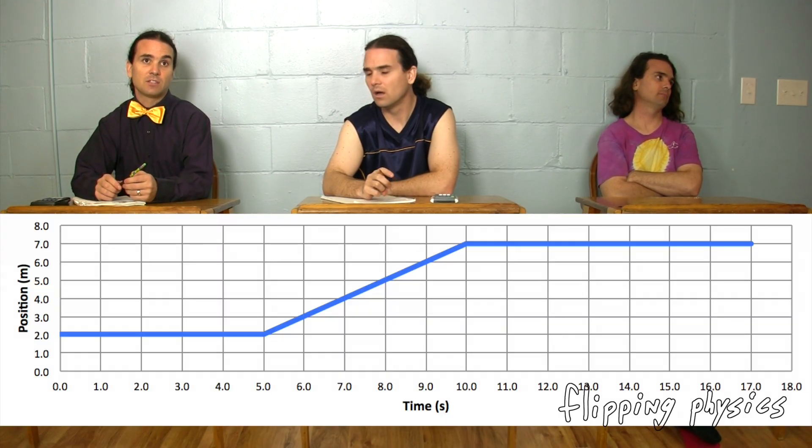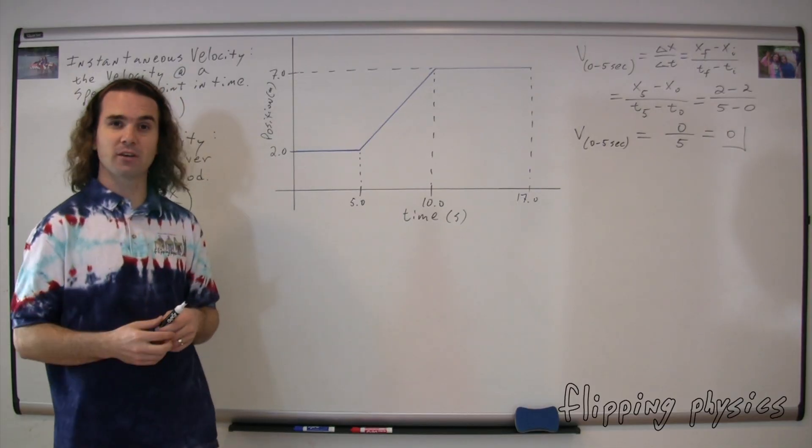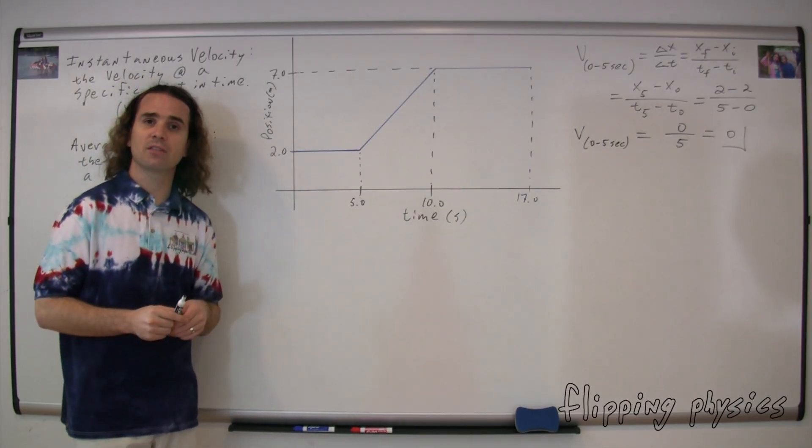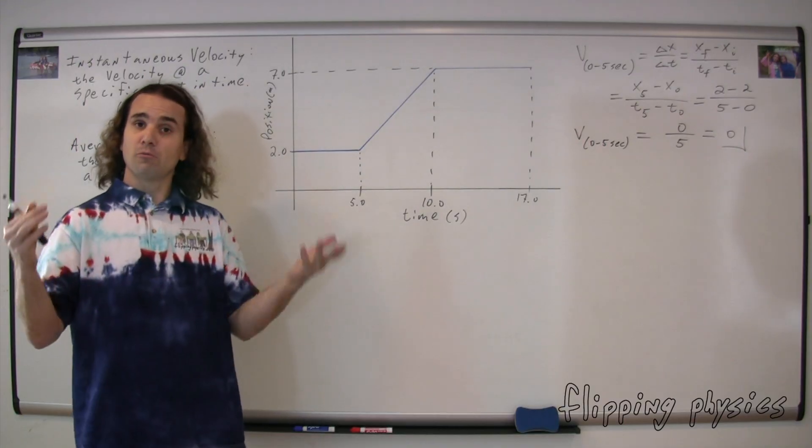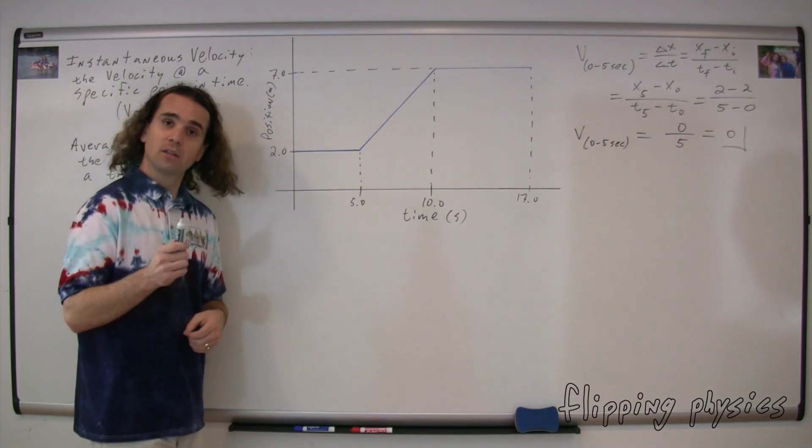Because if you watch the video or look at the graph, you can see that Genevieve doesn't move for the first five seconds, and when someone isn't moving, their velocity is zero. That's absolutely correct. There are other ways of looking at it, though. The line is horizontal from zero to five seconds. The slope of a horizontal line is zero, and the slope of a position versus time graph is velocity. Therefore, her average velocity from zero to five seconds must be zero. Both answers are correct.